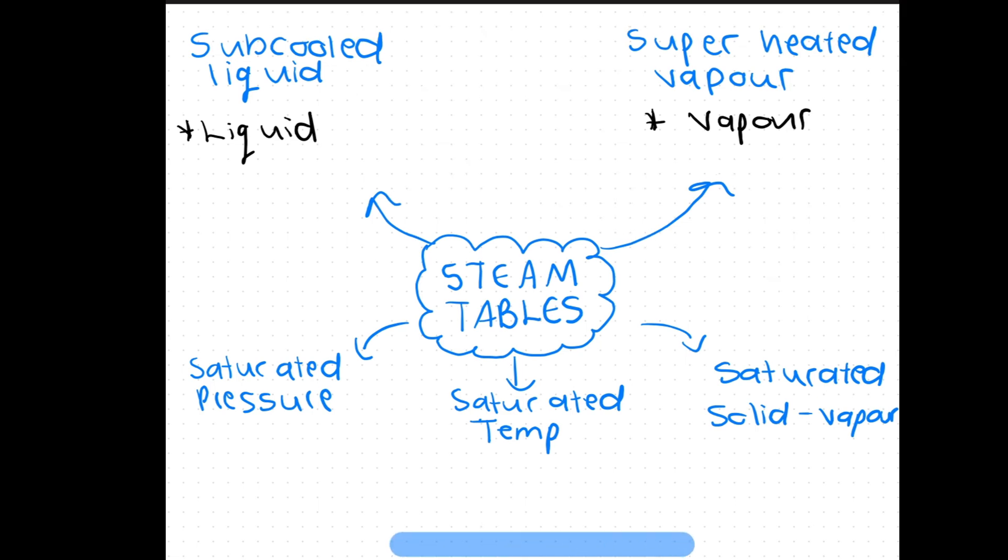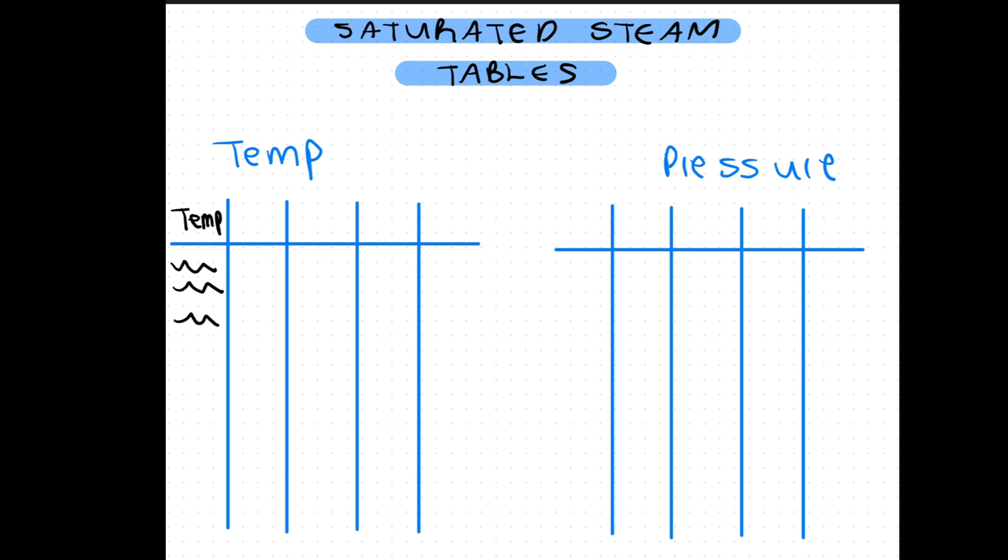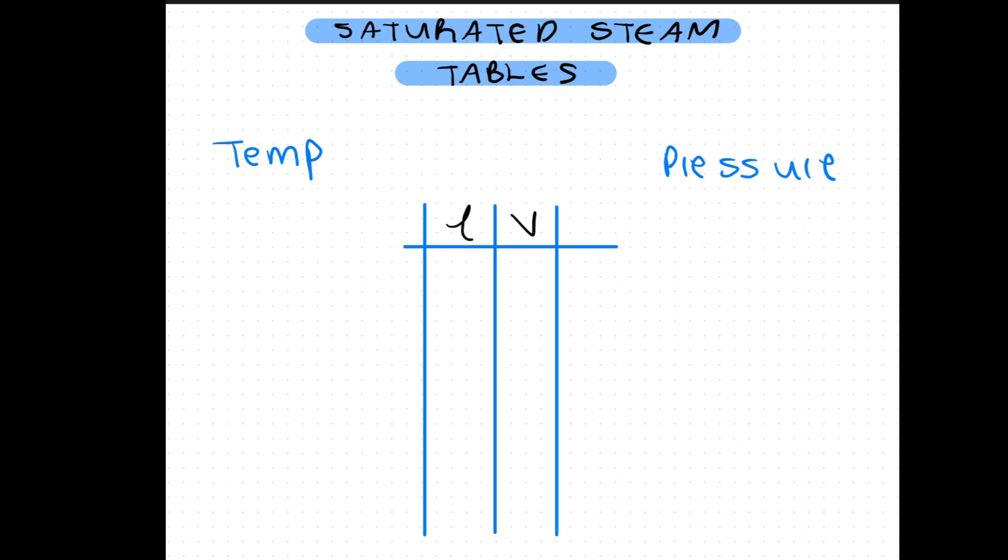Let's look at the saturated water table for temperature and pressure, which is a liquid vapor mixture. When you are given temperature you use the temperature table, and when you are given pressure you work with the pressure table. The tables are formatted so that there is a column for the liquid and vapor property.